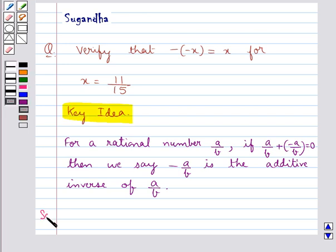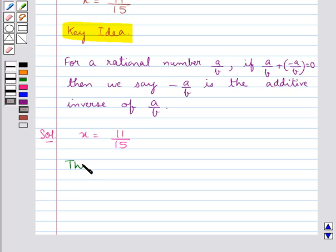Let's move on to the solution. We are given that x = 11/15. Now the additive inverse of x = 11/15 is -x = -11/15 since